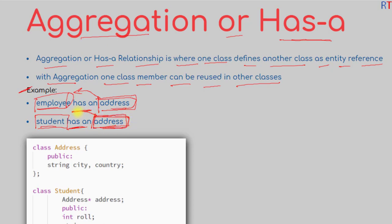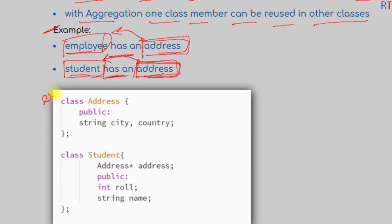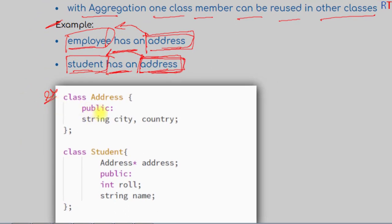Because there is a has-a relation between address and student, the members of the address class can be reused in the student class. For example, we have one class Address with members city and country, and then we have one class Student. Because there is a has-a relation between the Address and Student classes, we have reused the Address class inside the Student class.